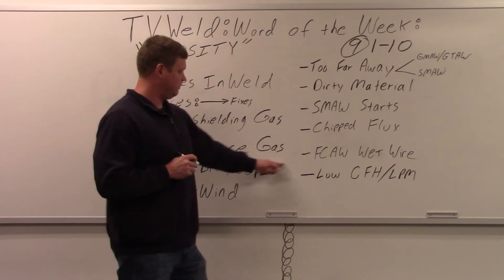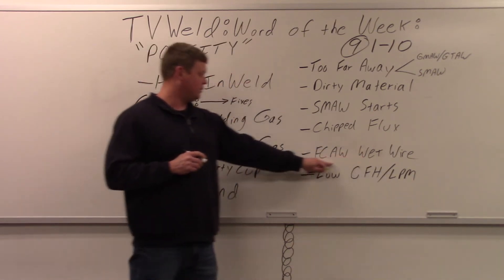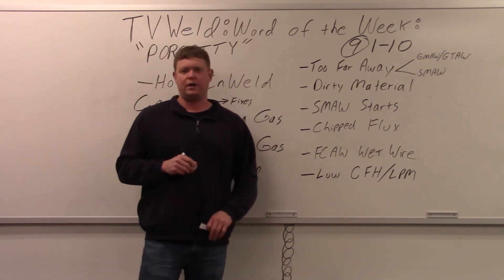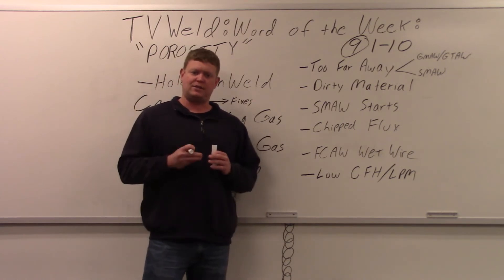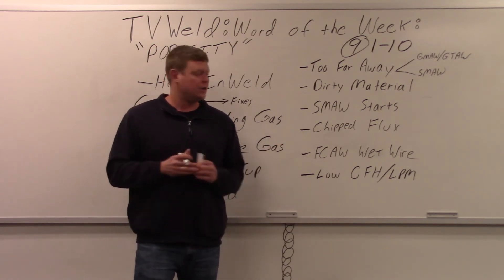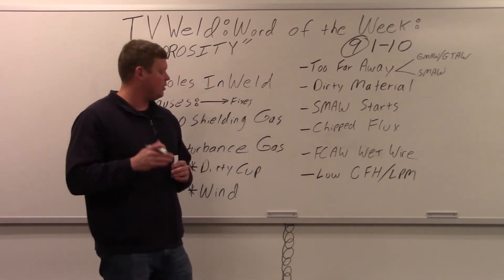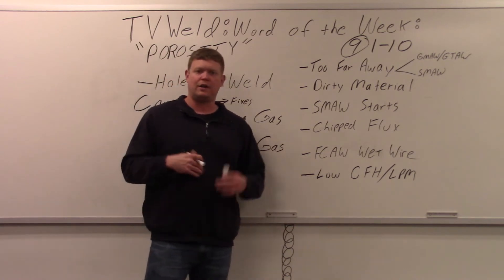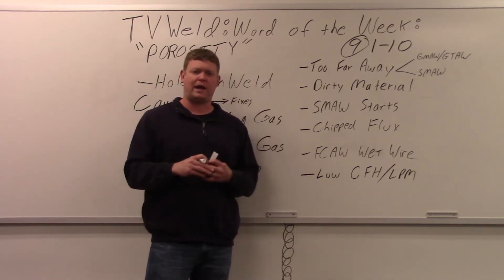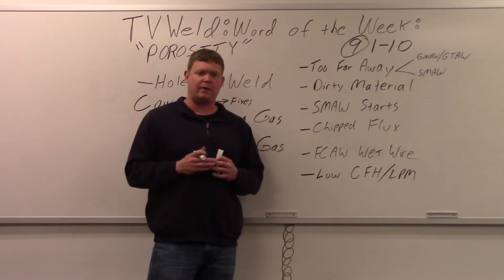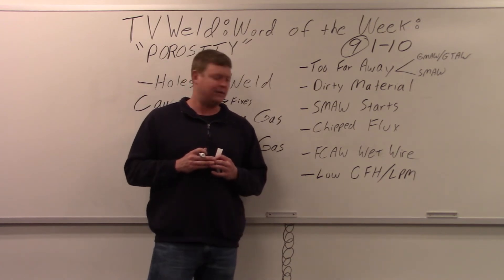With flux core arc welding, wet wire is a concern. You've got to take care of the wire — if it gets dampness on the inside, you'll end up with wormholes, chicken tracks, or other forms of porosity. To prevent that, if you're going to store flux core for a while, take it off the machine, put it in a bag, tape it up, and store it in a dry environment.